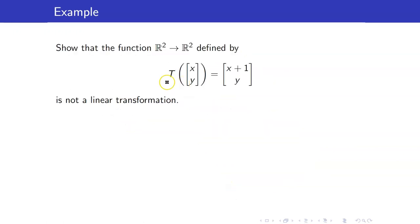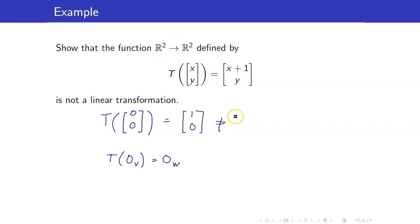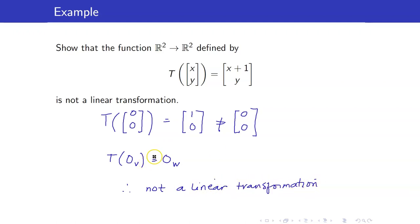For example, we want to show that the function that maps a vector (x, y) to (x+1, y) is not a linear transformation. To do that, let us get the image of the zero vector under T. The definition says we obtain the image by adding 1 to the first coordinate and copying the second. So T of (0, 0) is equal to (1, 0). However, if T is a linear transformation, the zero vector should map to the zero vector in W. But here the zero vector in R2 maps to something other than the zero vector in R2. So therefore this is not a linear transformation, because this property is not satisfied.